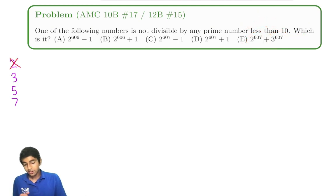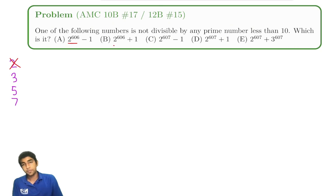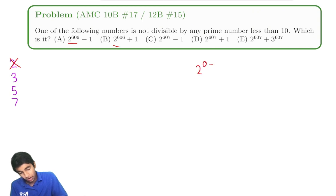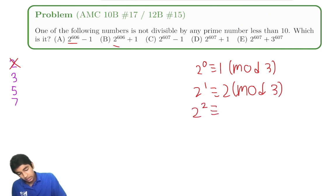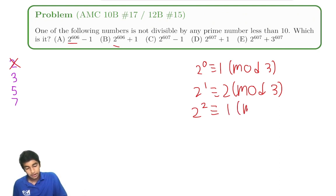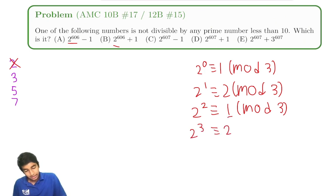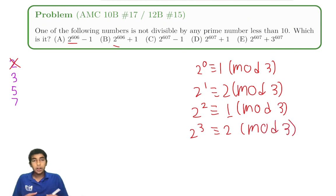What about 3? This is a little more interesting. We have a lot of powers of 2, so let's explore the exponent cycles for 2 mod 3. 2^0 is 1 mod 3, 2^1 is 2 mod 3, 2^2 is 4 which is 1 mod 3, and 2^3 is 2 mod 3. As you can see, there's a cycle: 1, 2, 1, 2, and so on — it cycles every 2.